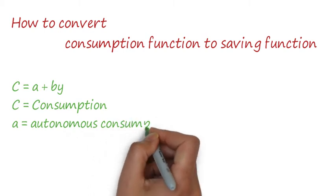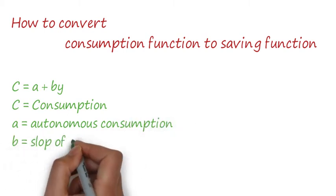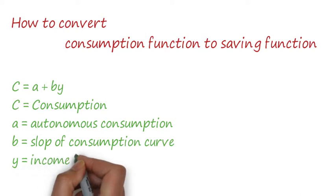Let's look at the nature of the consumption function: C = a + bY. C means consumption, a means autonomous consumption, and b means the slope of the consumption curve.